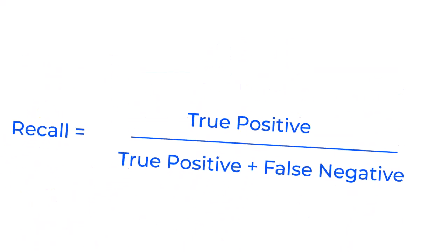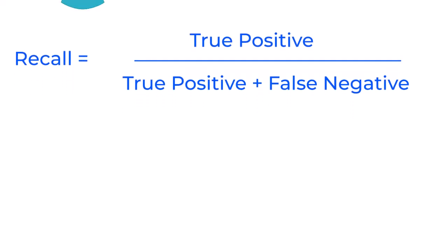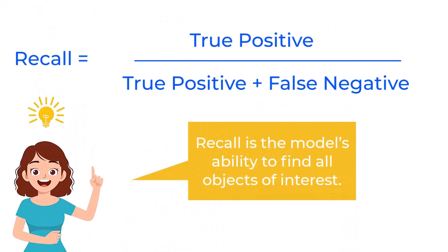Now let's review the recall equation. This score tells me the percentage of wind turbines my model detected and answers this question: Out of all the wind turbines in my images, how many did the model identify? If the recall is high, the model is good at finding most of the wind turbines. Ultimately, recall is the model's ability to find all objects of interest.